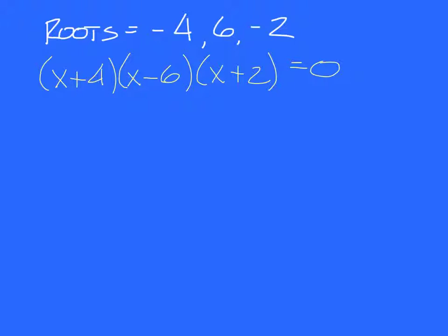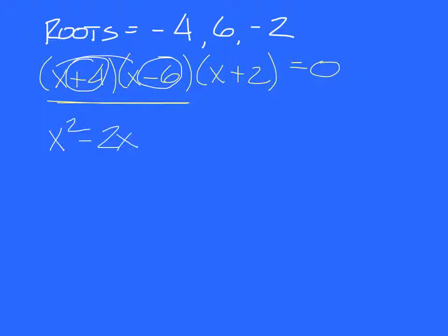When you multiply these out, when you have three of them, multiply the first two out to start with. Here's a shortcut that might help you. Clearly, I'm going to have x squared first. Then, if you want to skip a step, you can do 4 plus negative 6. What's 4 plus negative 6? Negative 2. So you just put negative 2x. If you add these items, you get the middle term if you put an x with it. And then if you multiply these items, you get the last term: minus 24.